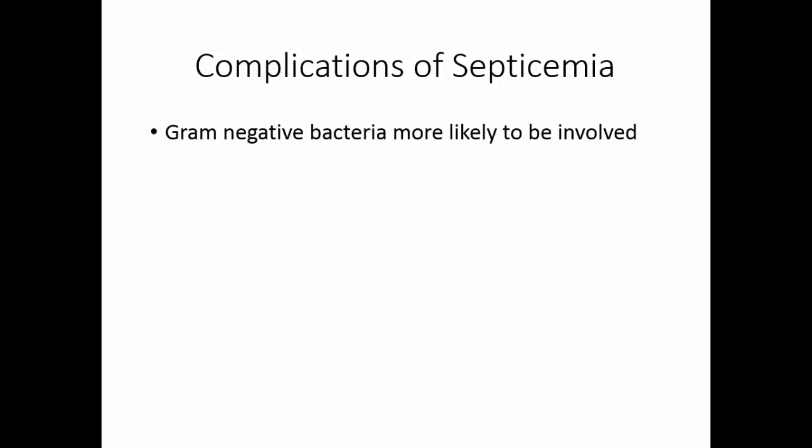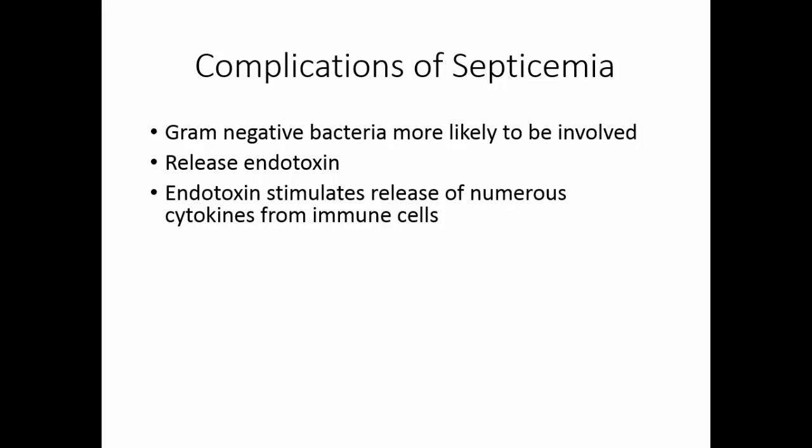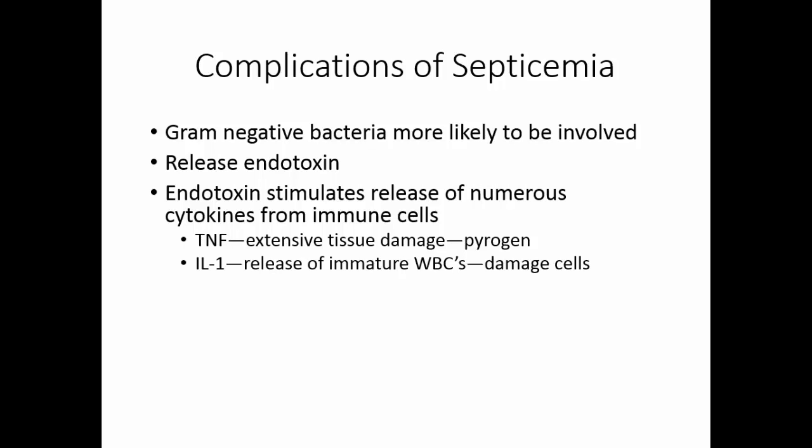Gram-negative bacteria are the most likely organisms to cause complications of septicemia because they release endotoxin, which stimulates the release of several different cytokines from immune cells. Tumor necrosis factor can cause extensive tissue damage and also acts as the pyrogen. Interleukin-1 causes the release of immature white blood cells from the bone marrow, and these cells will actually damage normal cells. Interleukin-6 and interleukin-8 can be responsible for massive vasodilation leading to vascular shock, and also can do extensive blood vessel damage leading to hemorrhage.